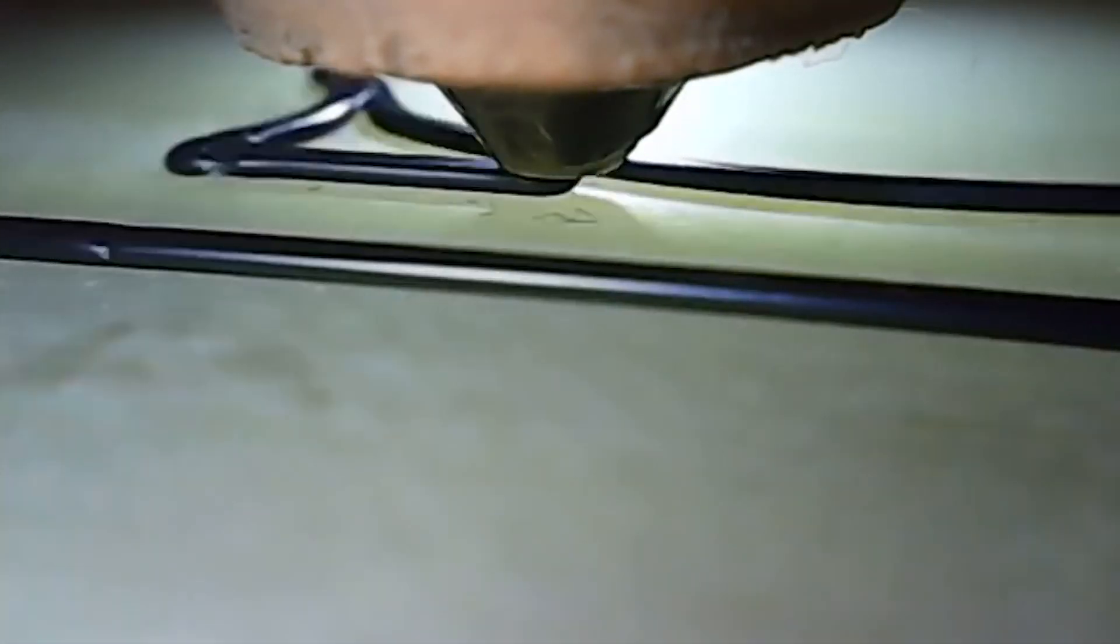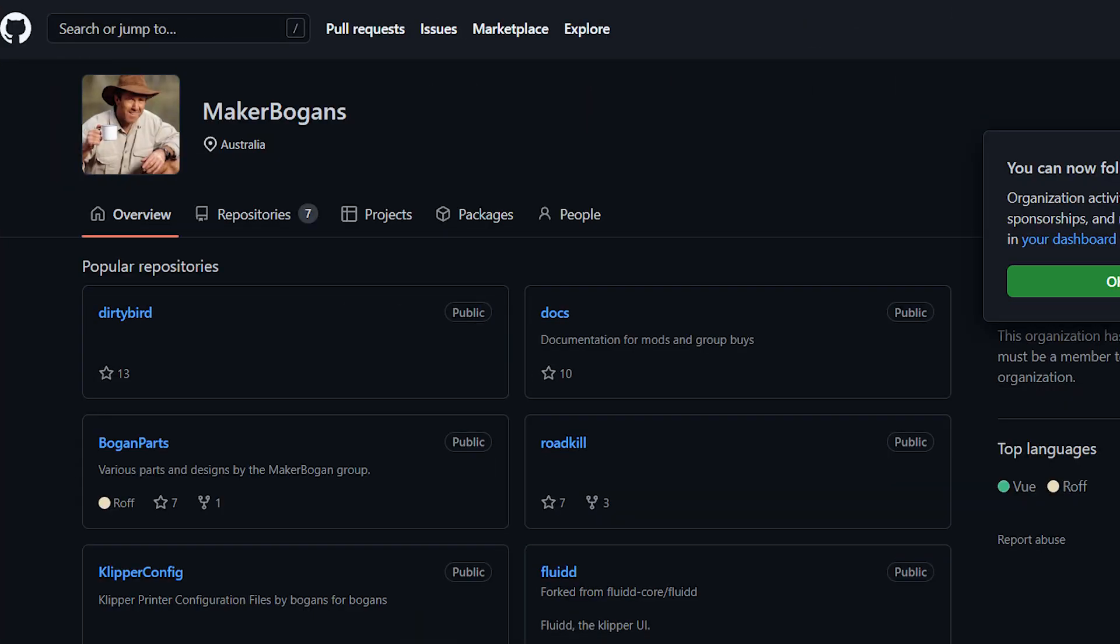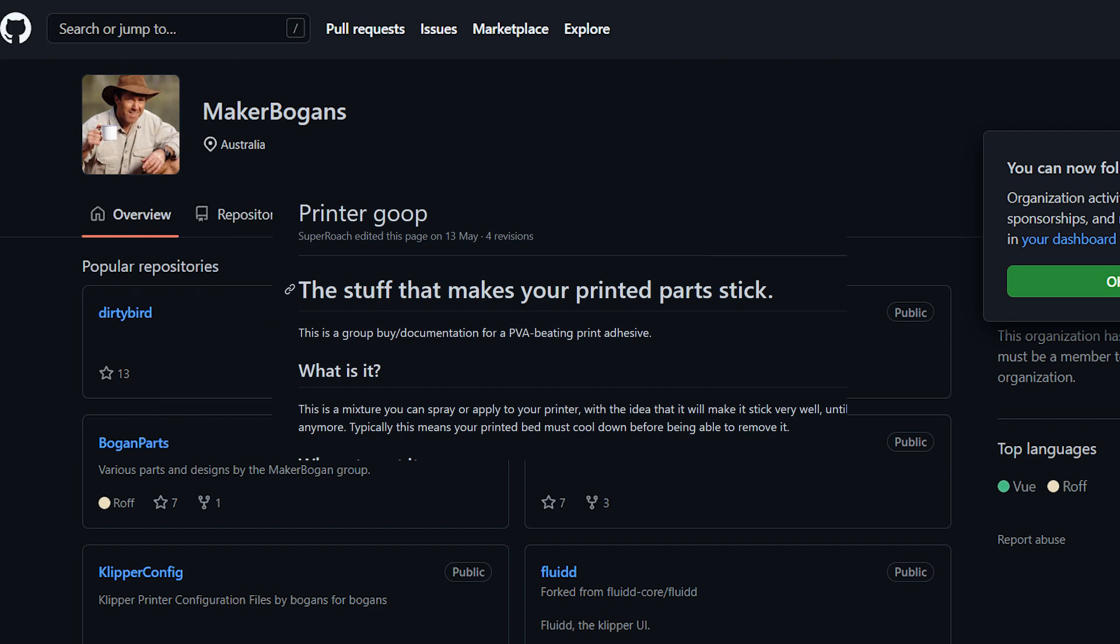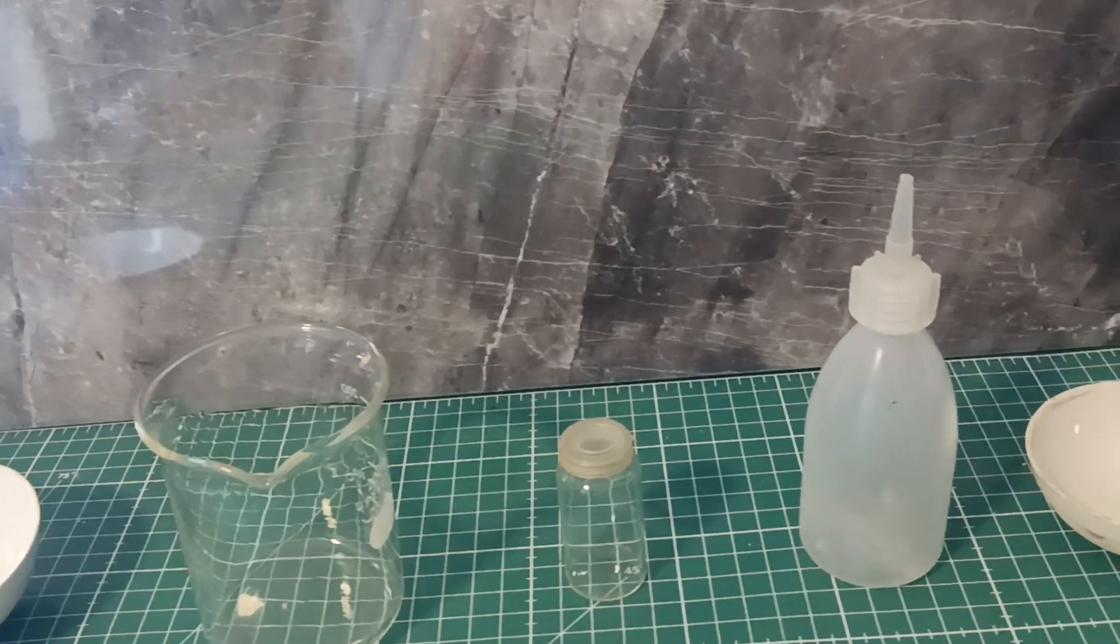After a bit of digging, and you wouldn't guess this, inside the Aussie 3D printer space, a fellow maker called Maker Bogans had a recipe for something called 3D Printer Goop posted on his GitHub. He described it as an adhesive for 3D printer beds, so I went with it.